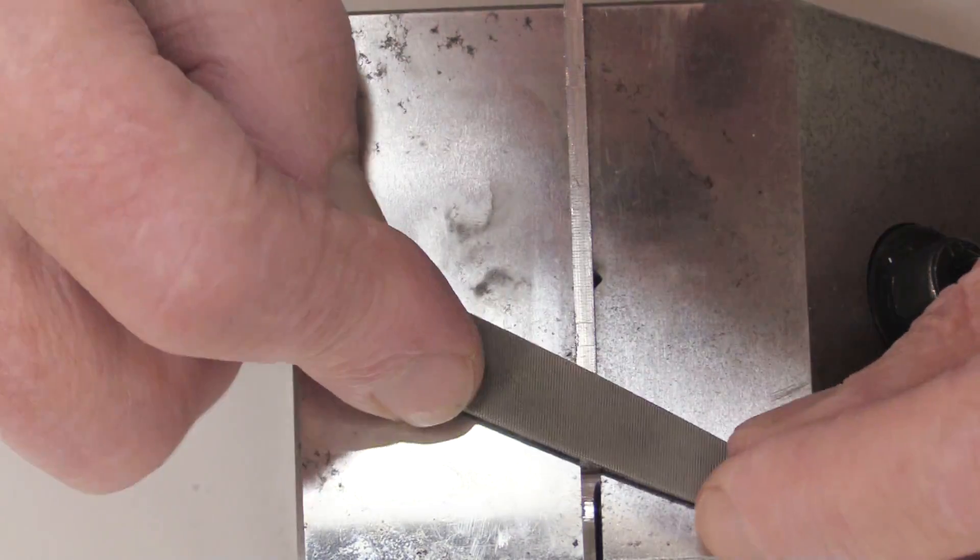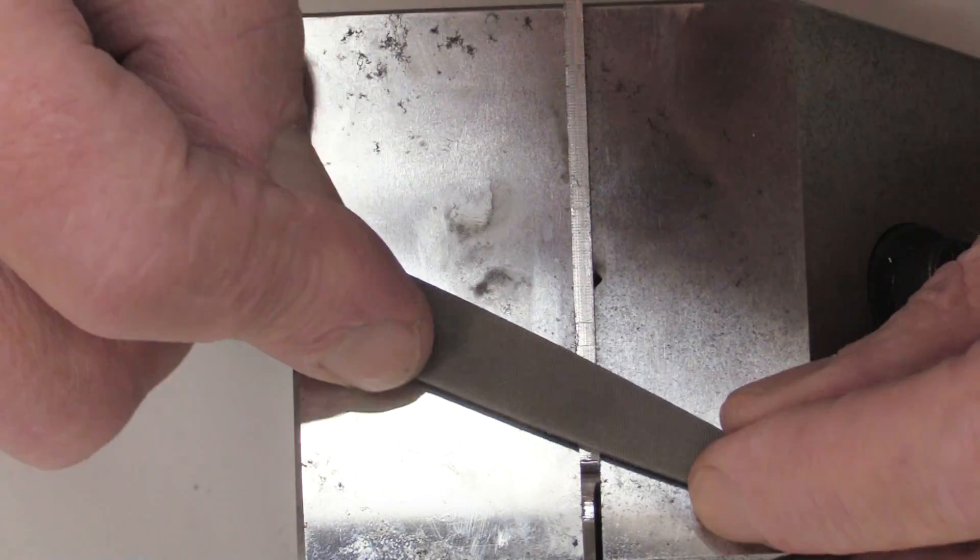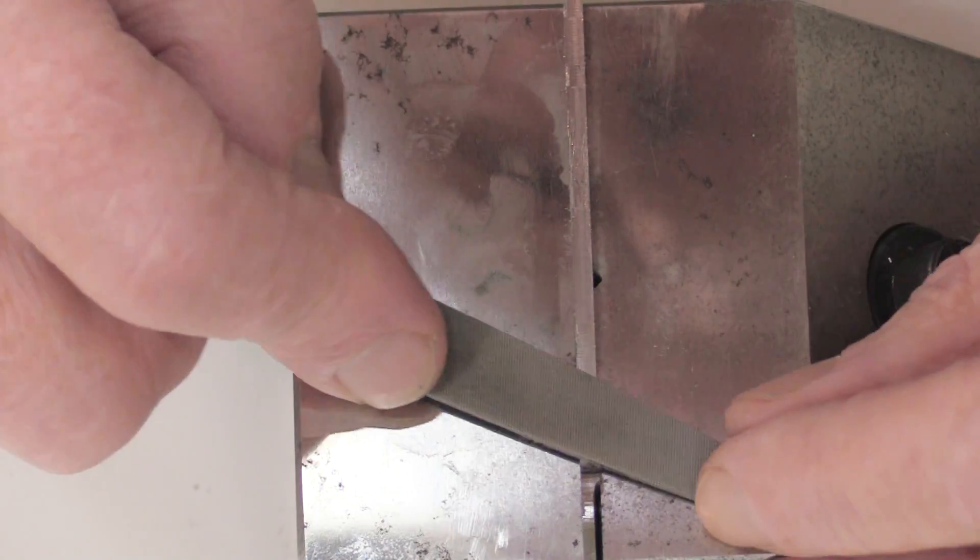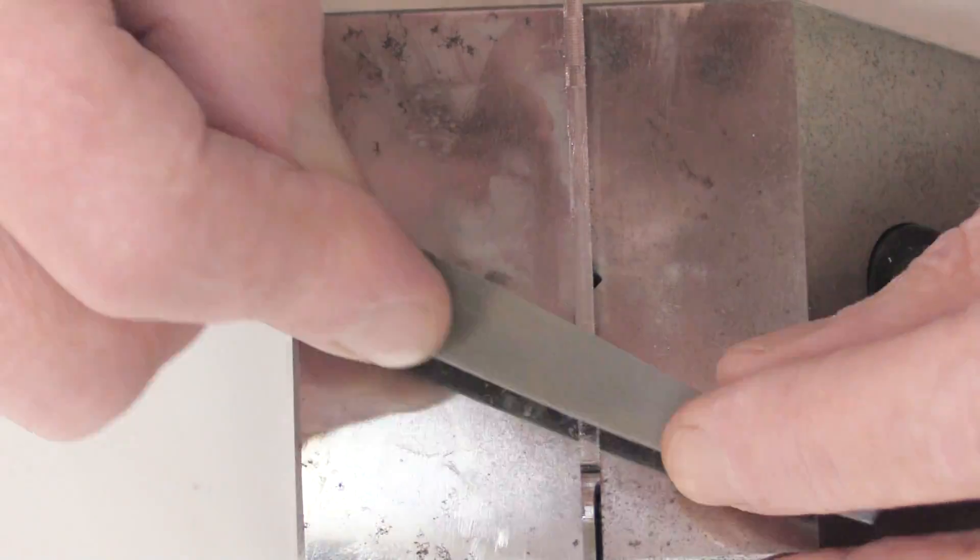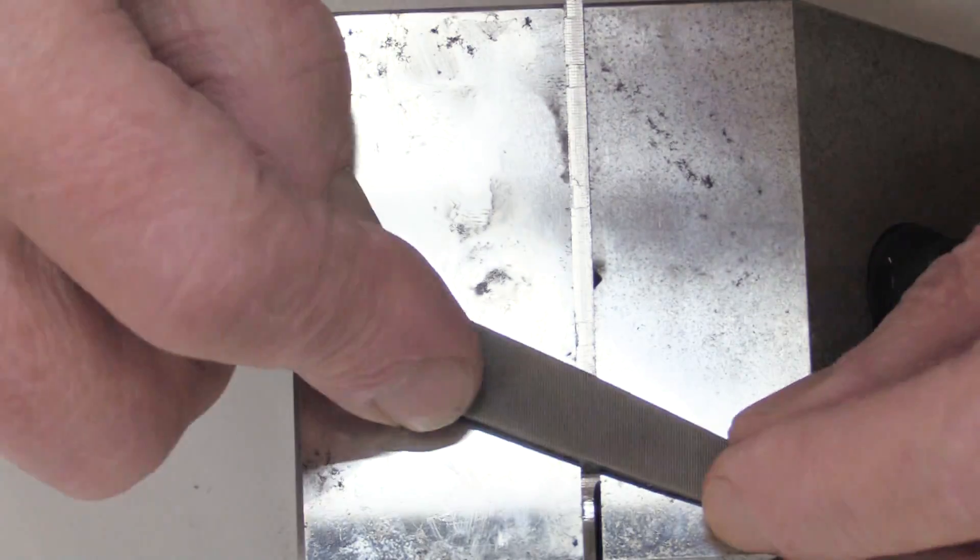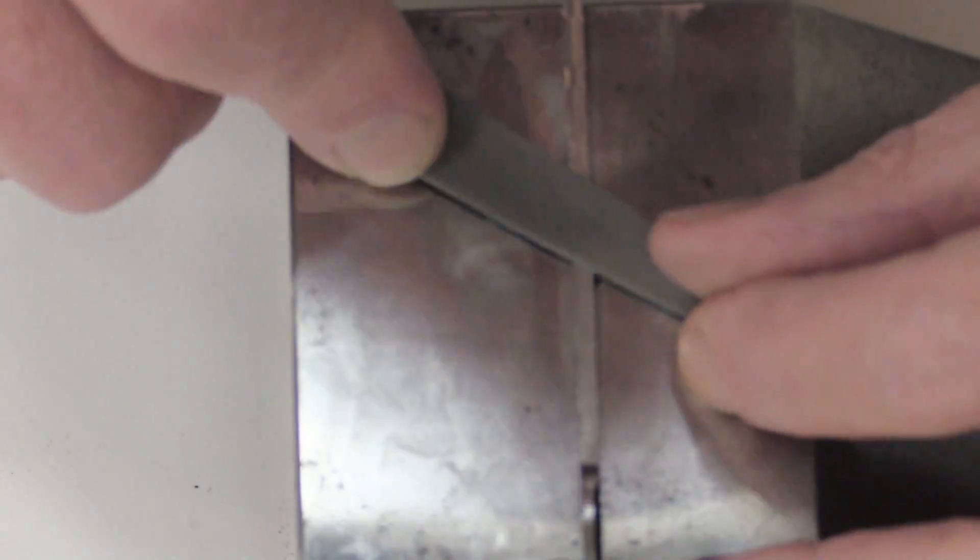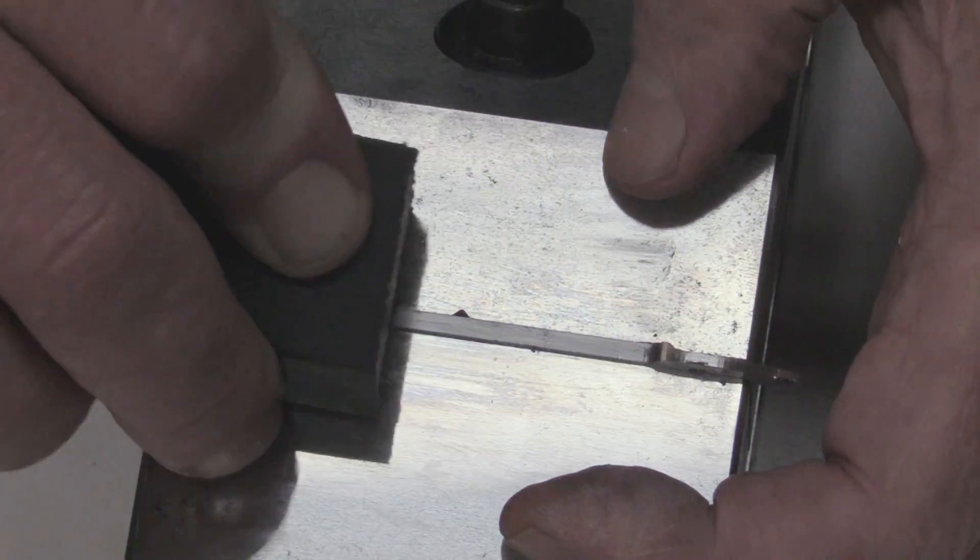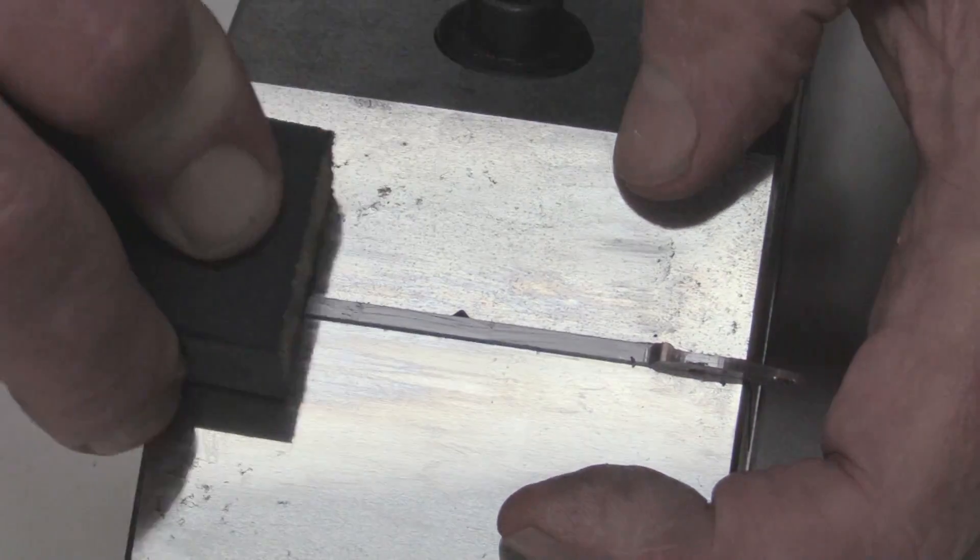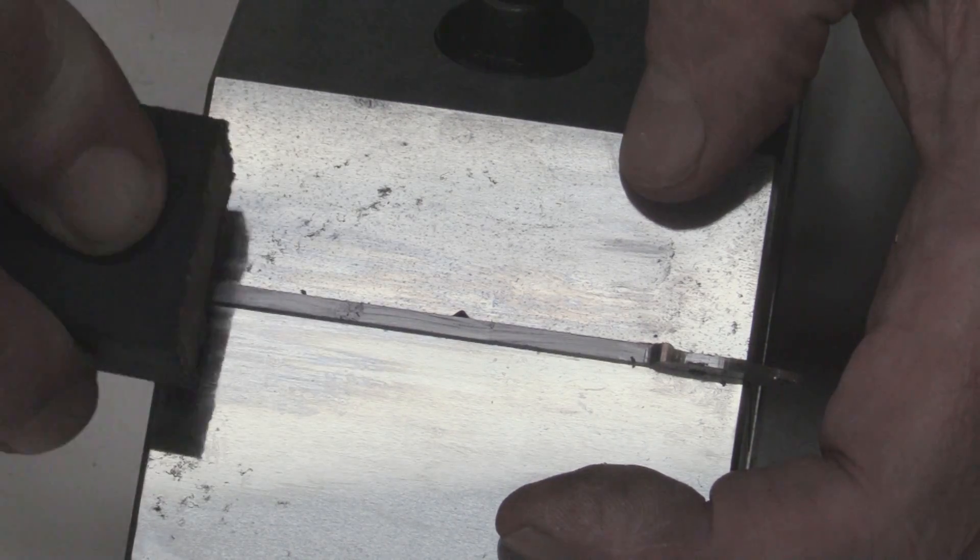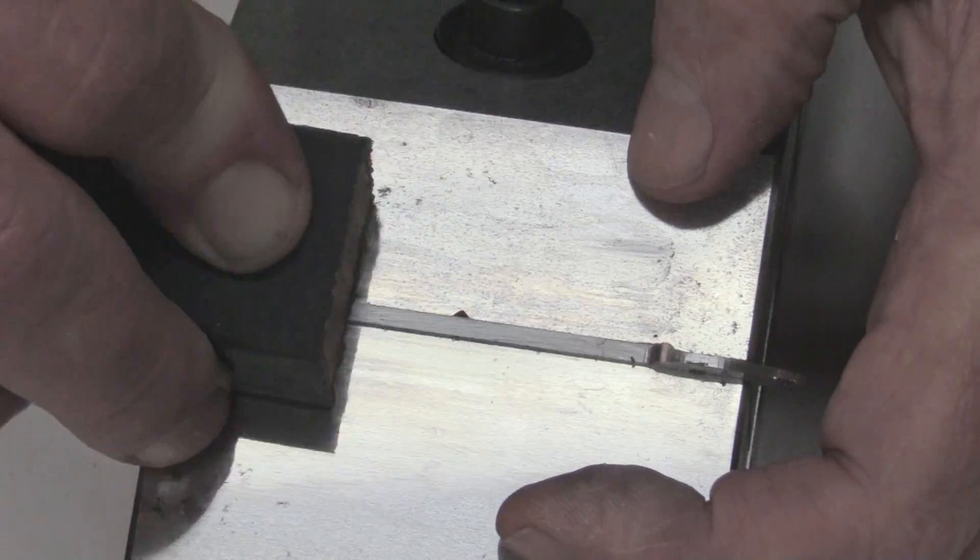Next, I move the part into a small vise, and using a file, I remove the remainder of the tabs. Once that was reasonably smooth, I wrapped some sandpaper around a wooden block and sanded the part completely smooth.